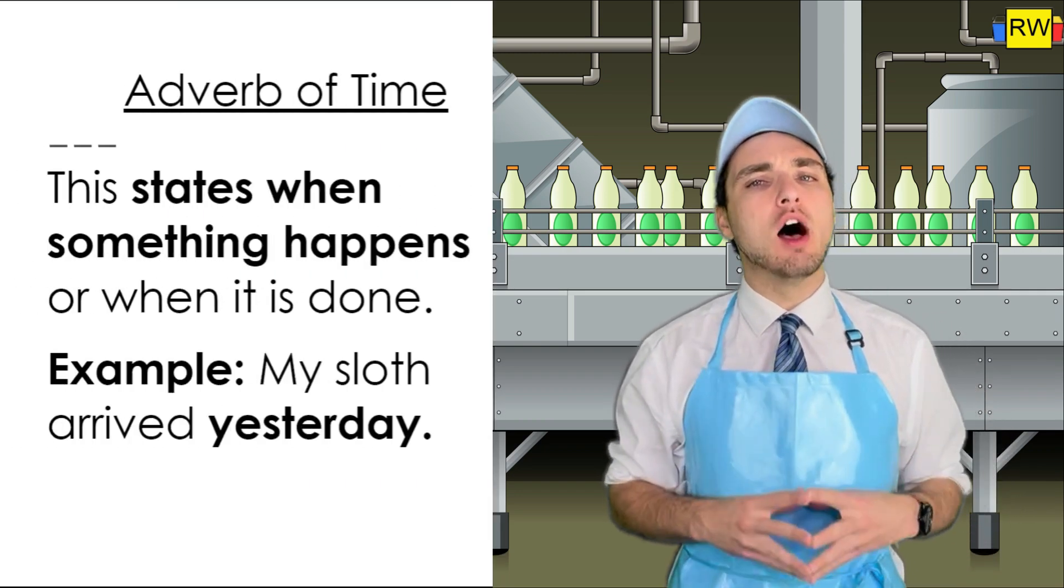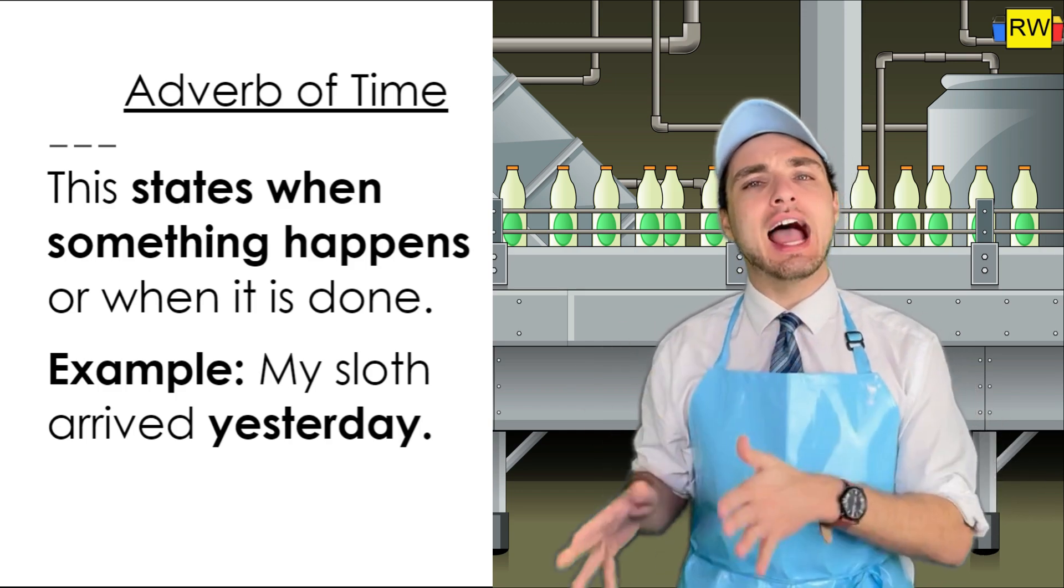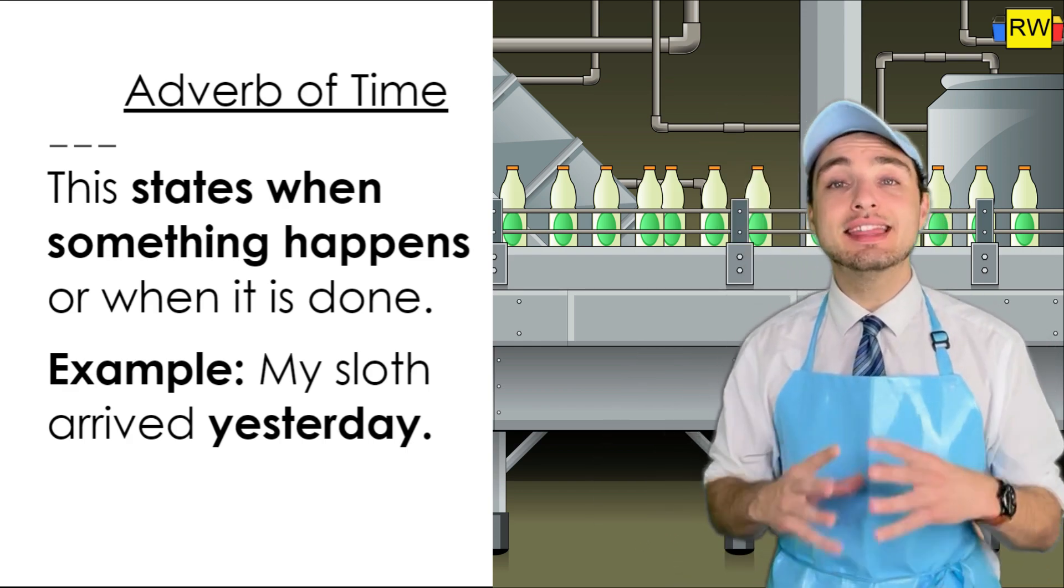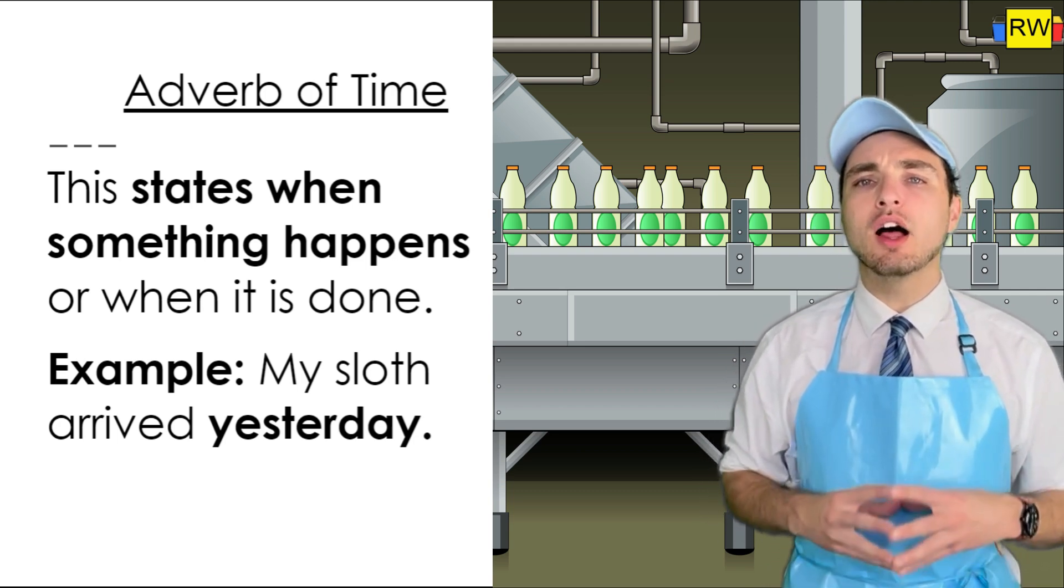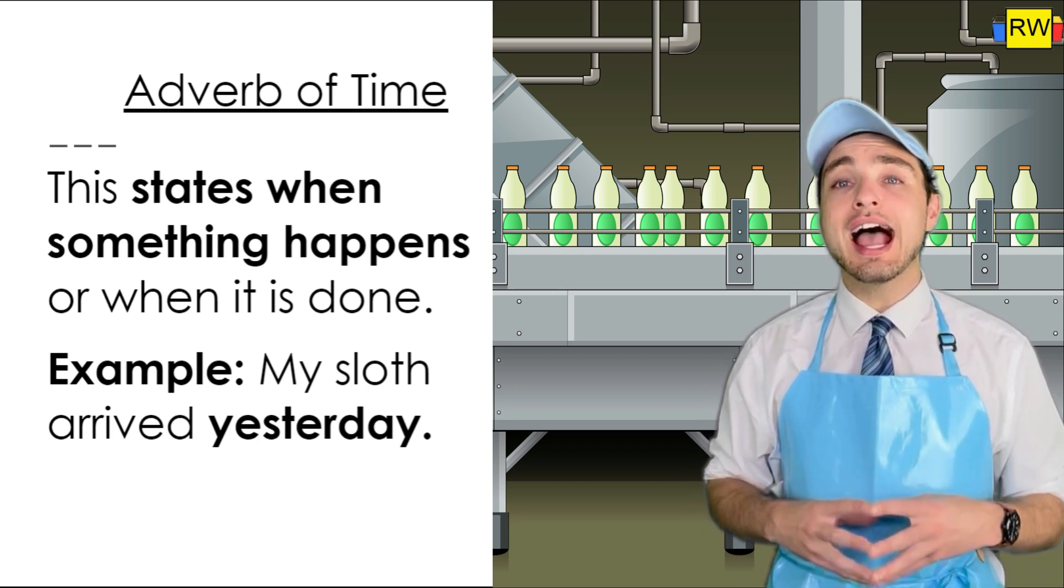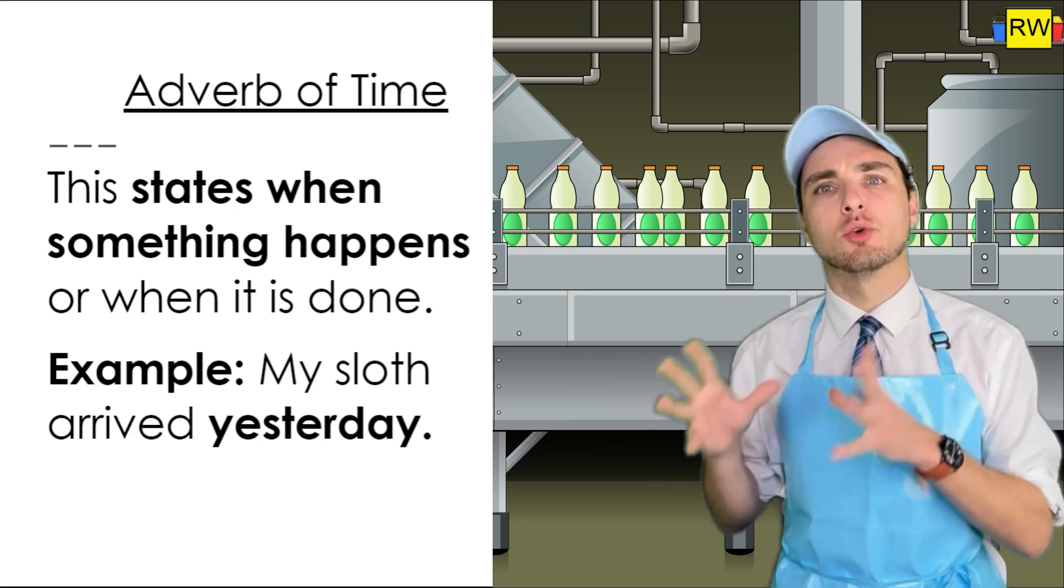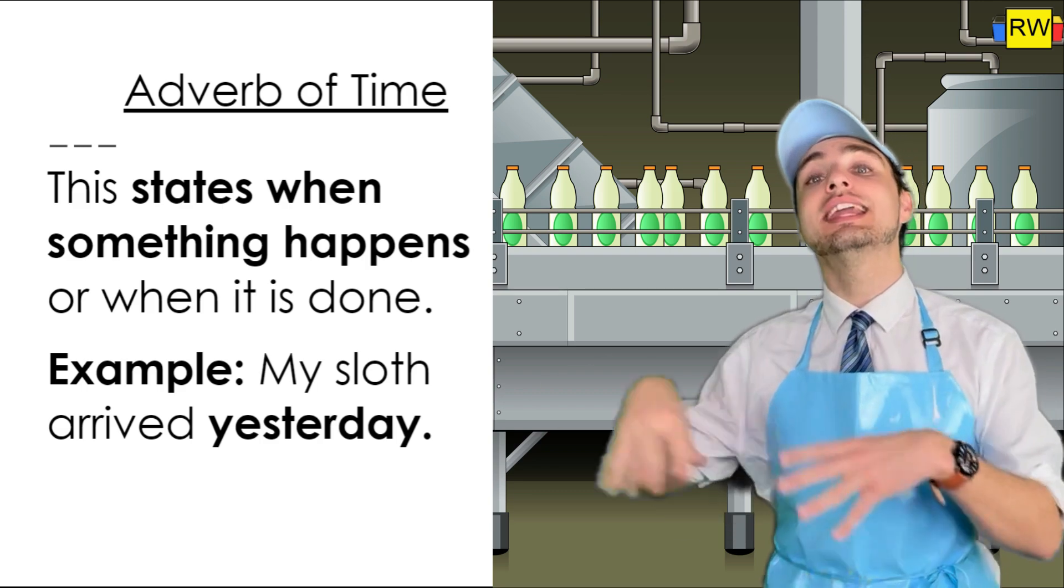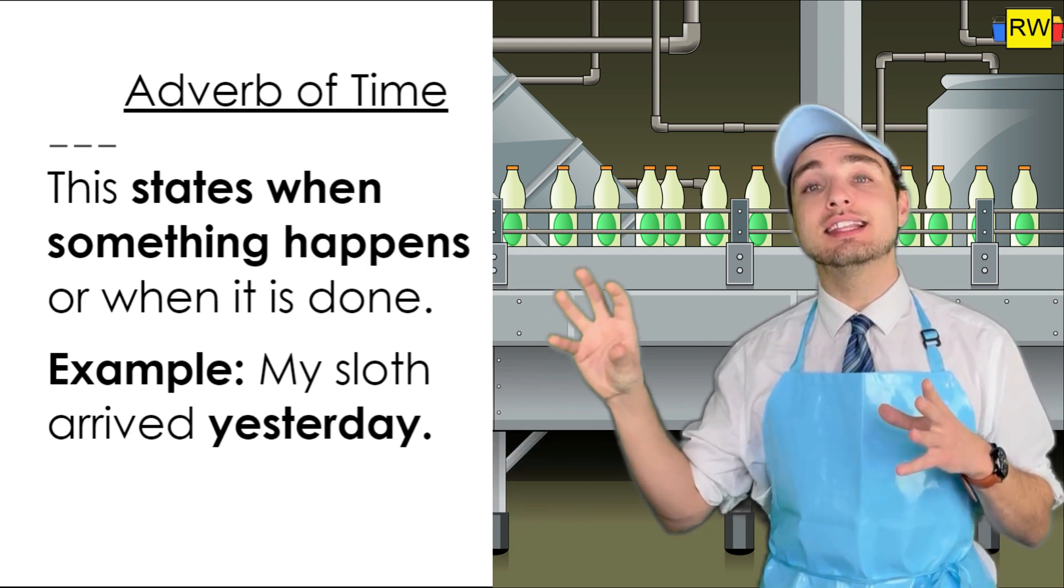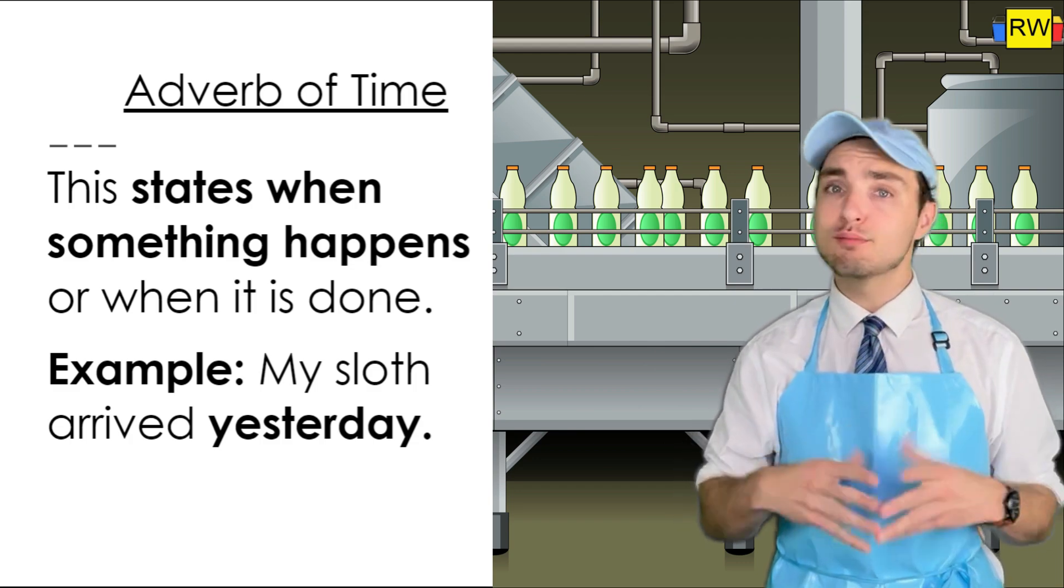Next are adverbs of time. This states when something happens or when it is done. For example, we can have this sentence: My sloth plush arrived yesterday. In this sentence, we have the main verb arrived. Well, when did the sloth plush arrive? The sloth plush arrived yesterday. Therefore, yesterday is the adverb of time because it's describing and specifying when the sloth plush arrived. Pretty easy, right?